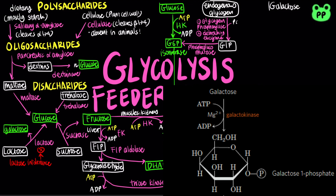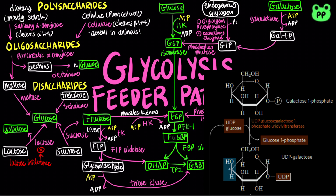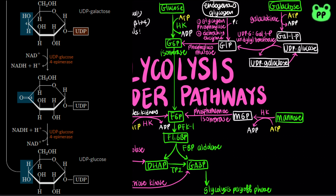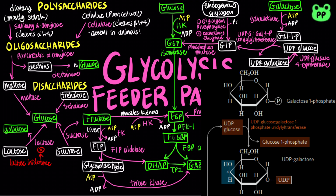Galactose is first phosphorylated at carbon-1 by galactokinase, producing galactose-1-phosphate, which is then converted to its epimer at carbon-4, glucose-1-phosphate, by the enzyme UDP-glucose-galactose-1-phosphate uridylyl transferase. UDP, or uridine diphosphate, functions as a coenzyme-like carrier of hexose groups. UDP-galactose is formed when galactose-1-phosphate displaces glucose-1-phosphate from UDP-glucose. UDP-galactose is then converted to UDP-glucose by UDP-glucose-4-epimerase, and UDP-glucose is recycled through another round of the same reaction.